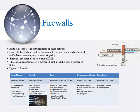Packet filtering firewalls examine header information of data packets, often based on a combination of IP source and destination address, direction (inbound or outbound), and TCP or UDP source and destination port requests. Stateful firewalls are like a nosy neighbor who keeps track of everything. Like packet filtering, but the router keeps track of a connection — it knows which conversations are active, who is involved, etc. It is more complex and can be targeted with a DoS attack by trying to fill up all entries in the state table, using up memory.